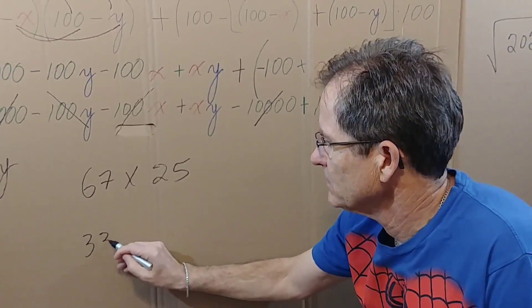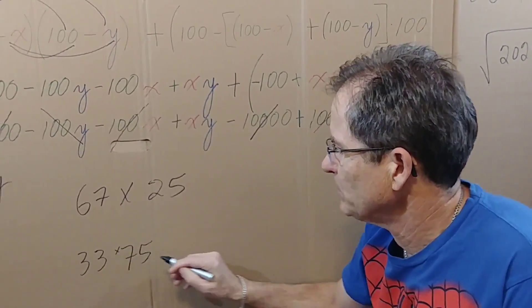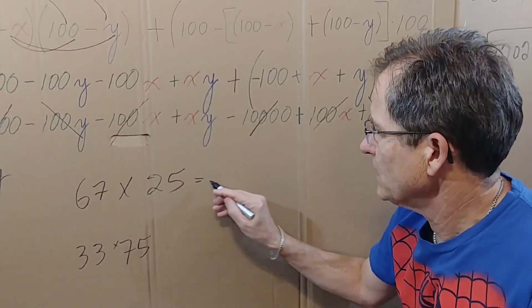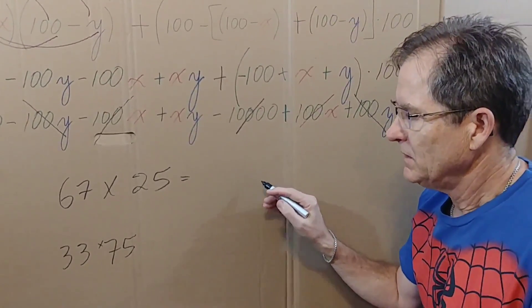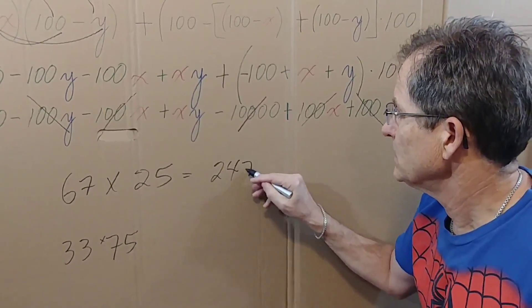And the first thing you do is you multiply them. That gives us the last two digits. In this case though, it gives us more than two digits—it gives us 2475 because it's more than 100.